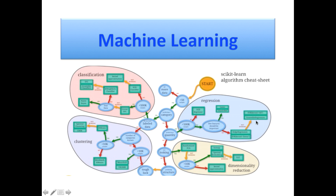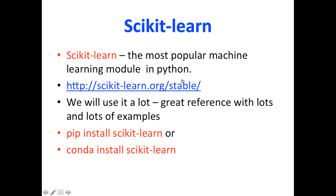We have various categories of machine learning like classification, clustering, and regression. Let's see what the scikit-learn library is.